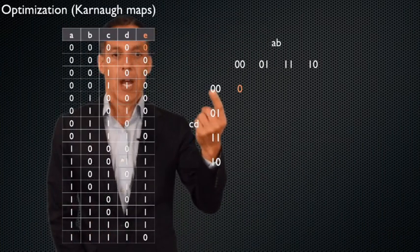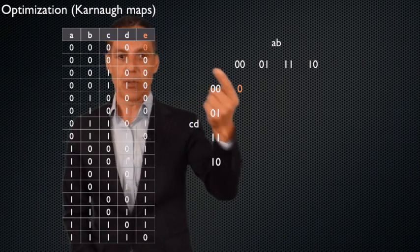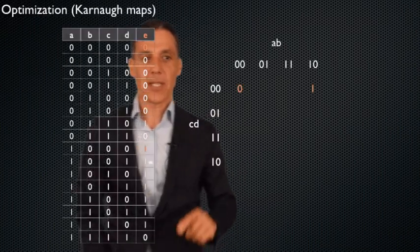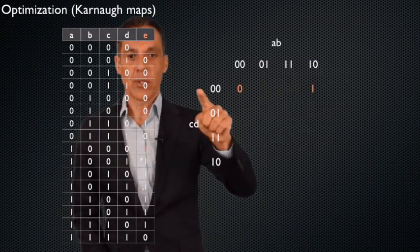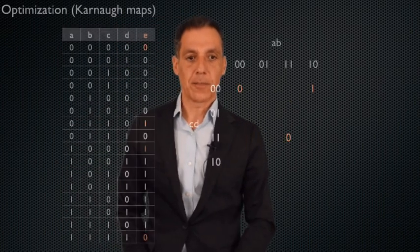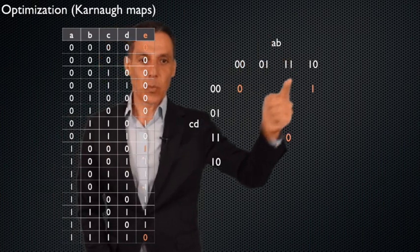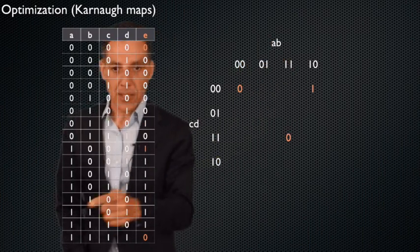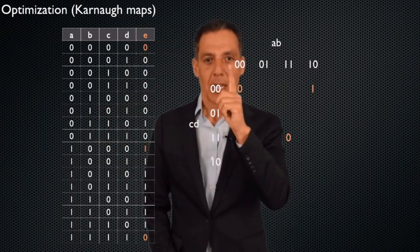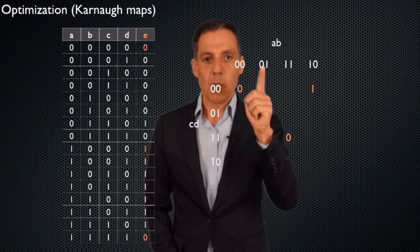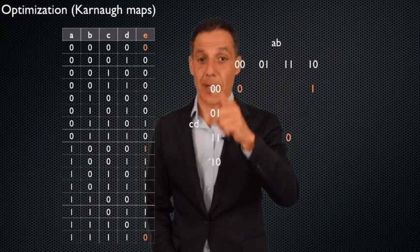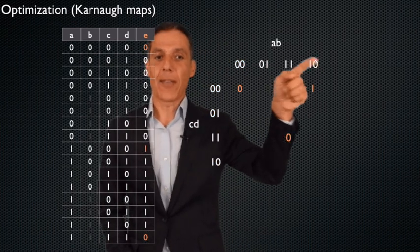Let's go ahead and start populating it. Zero, zero, zero, zero — the output is zero, so I put a zero in this cell. For one, zero, zero, zero — that row has a one, so I put a one there. For one, one, one, one — output is zero. Notice the ordering here: I've got zero, zero, zero, one, then one, one, and one, zero. That ordering matters — you have to do it in this order, and I'll explain in a bit why this ordering matters.